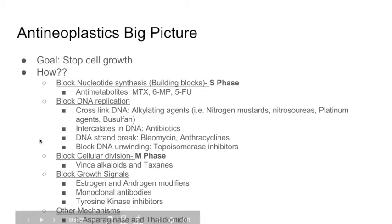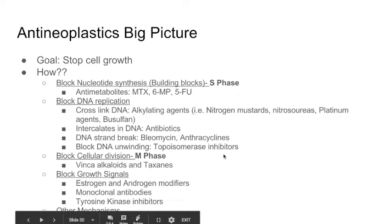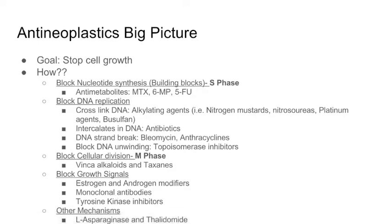The last approach is to block the signal. Each cancer needs a signal to proliferate and survive, and we've identified ways to block those signals. If the cancer depends on estrogen or androgens, we have drugs that block these. If it depends on a specific signal we've identified, we can use monoclonal antibodies or tyrosine kinase inhibitors. The goal is to block the growth signal.